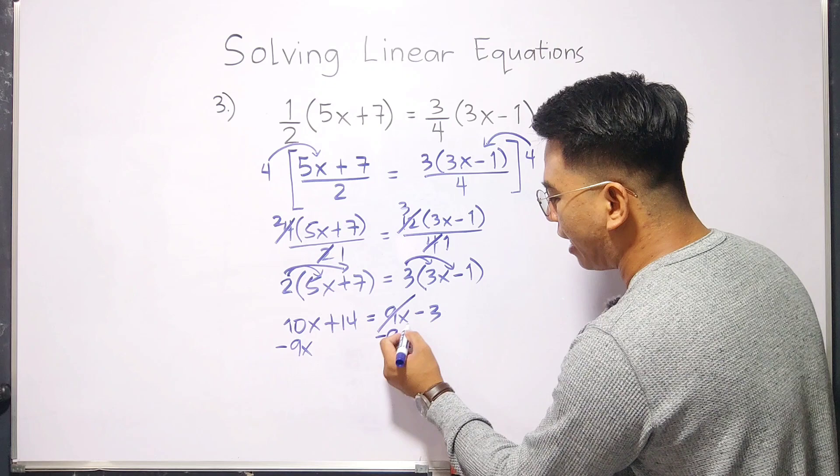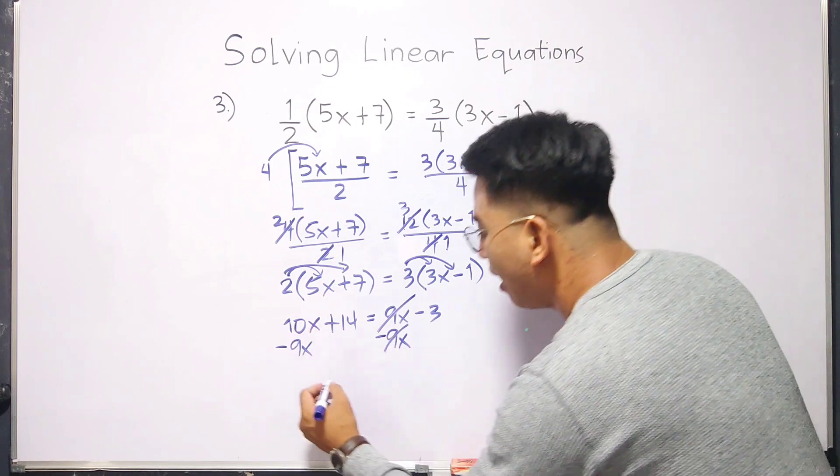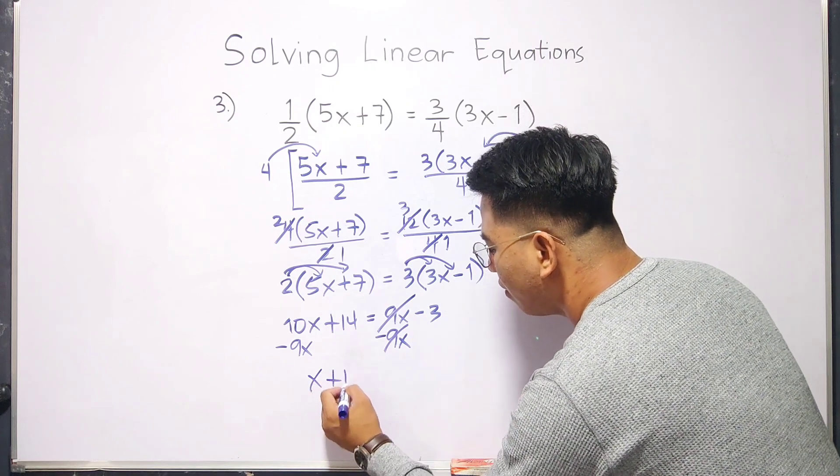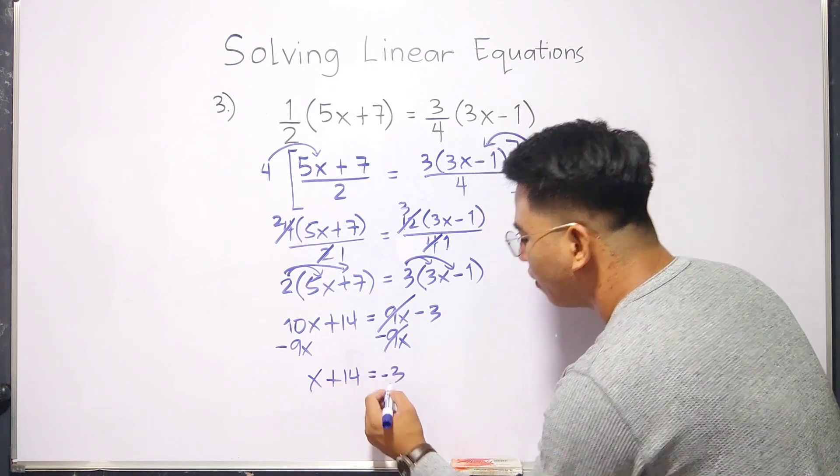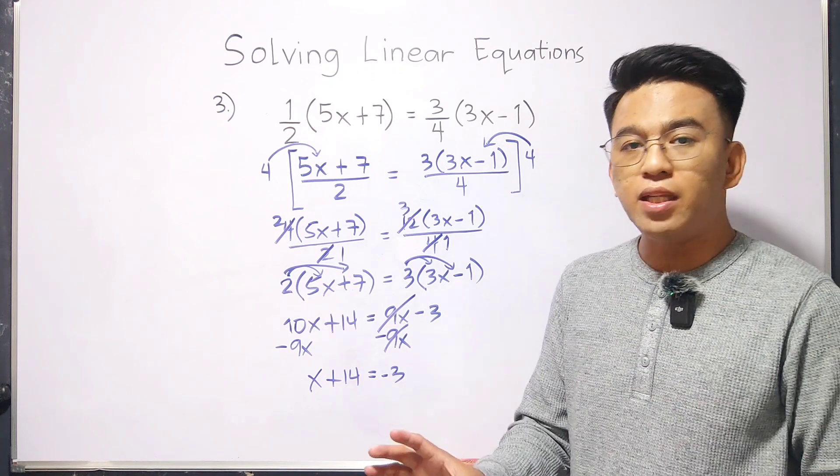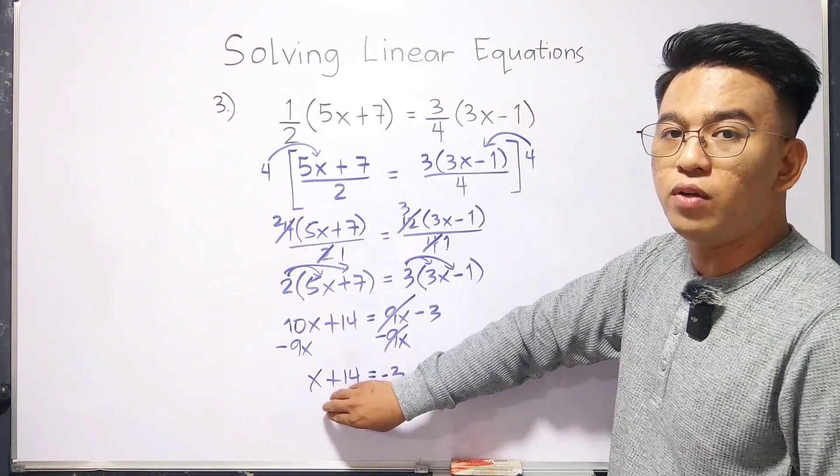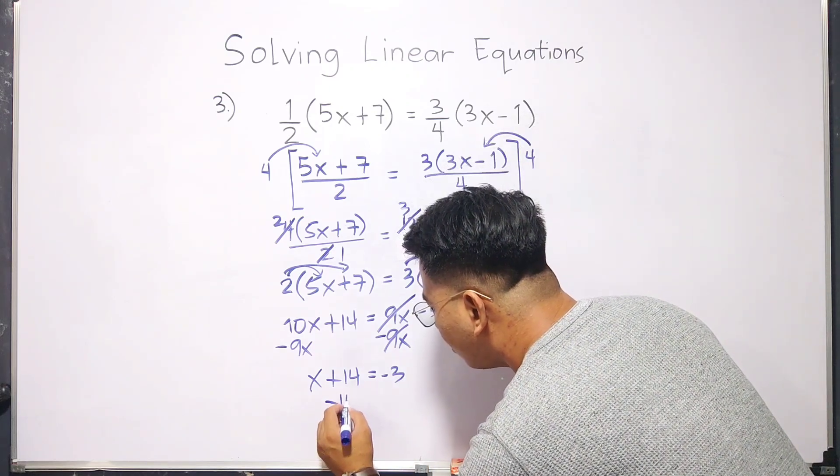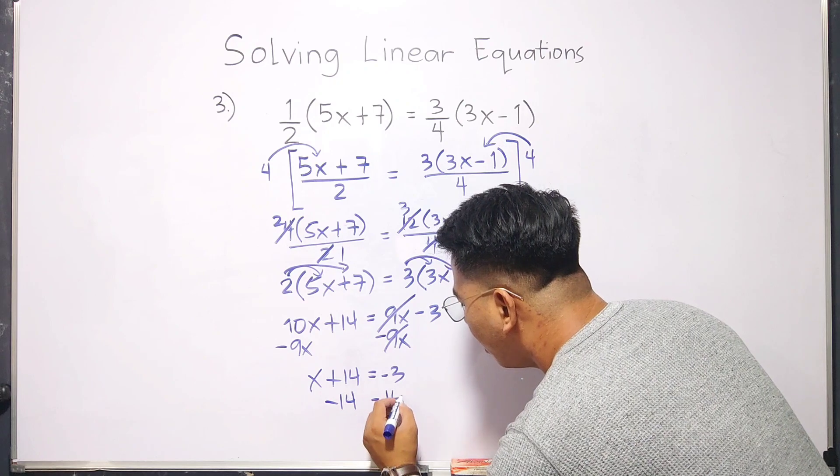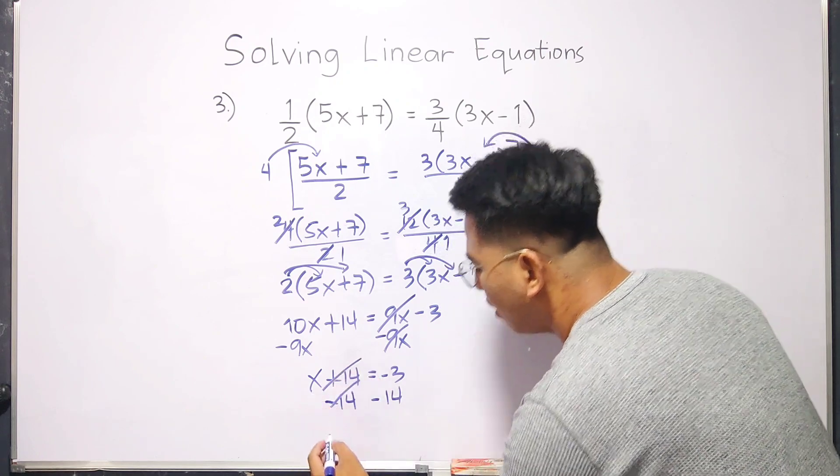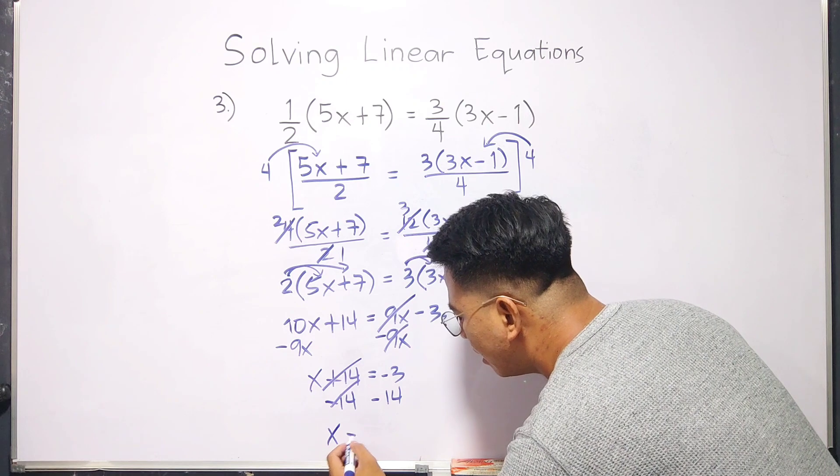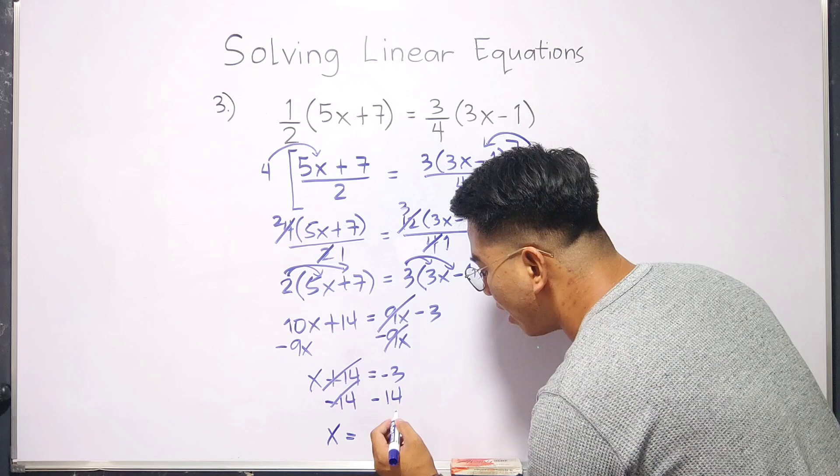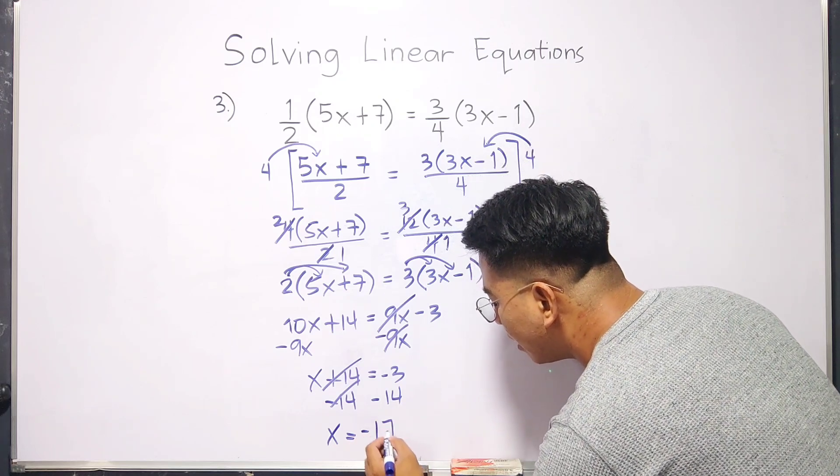So, this is cancelled out. 10x minus 9x is x. So, what we have here is x plus 14 is equal to negative 3. So, what remains here is that we need to eliminate 14. And to eliminate that, subtract by 14 both sides of the equation. What we have here is x is equal to negative 3 minus 14. That is negative 17. That's the solution for number 3.